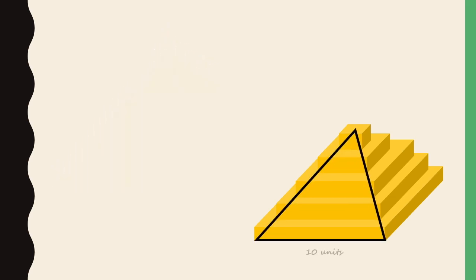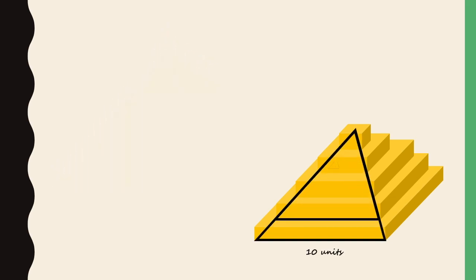Well, look from the side. We can see that these are actually similar triangles, which means that the length of the base will reduce proportionally to the decrease in height.